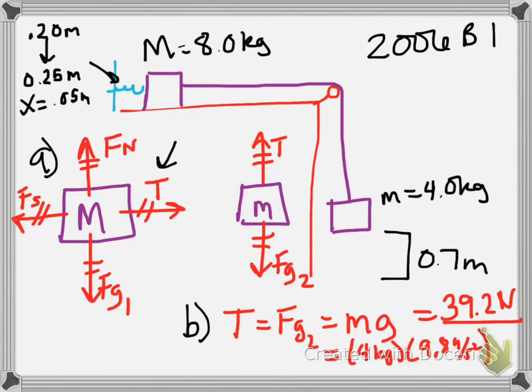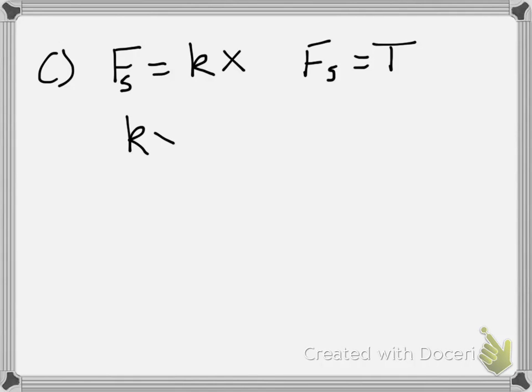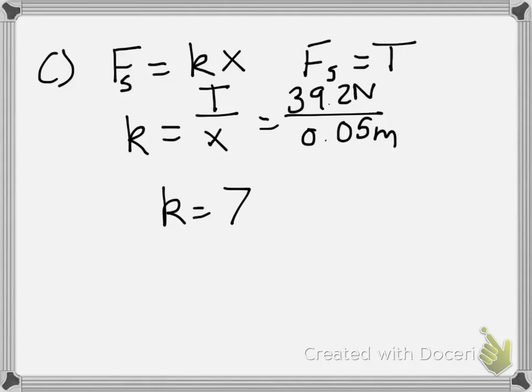So if we take a look at Hooke's Law, that the force from the spring is equal to k times x. And yeah, it's a negative k times x, but that negative just tells us a direction. And we also know that the force of the spring is equal to the tension. That comes from the free body diagram here. Then we can calculate k as just being equal to the force of the spring, or tension actually. So that means it's 39.2 newtons divided by 0.05 meters. And when you do the calculation, you get a total of 784. And the unit for it would be newtons per meter.